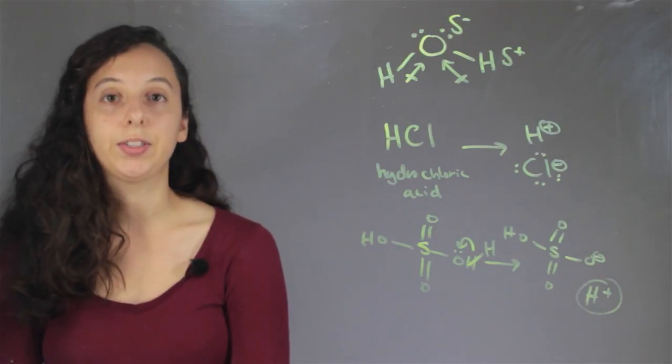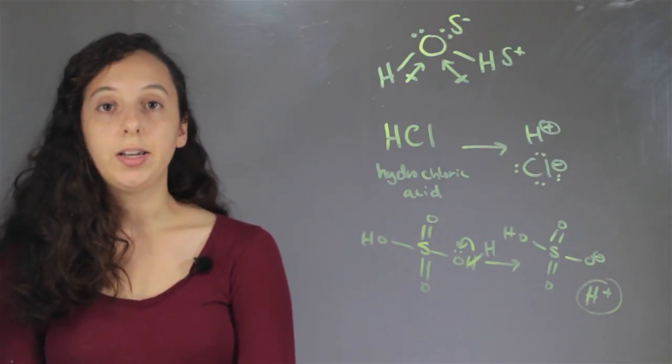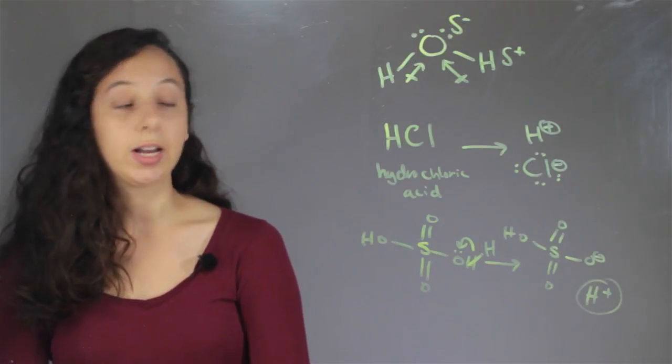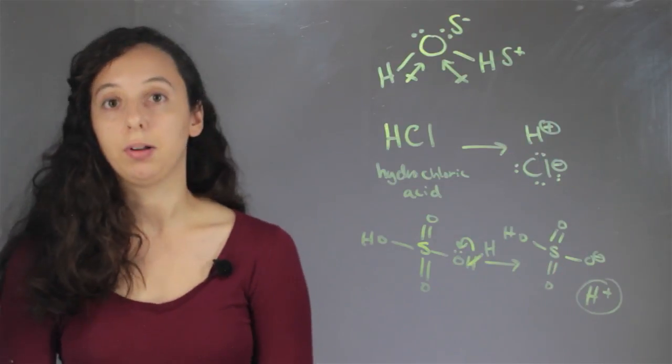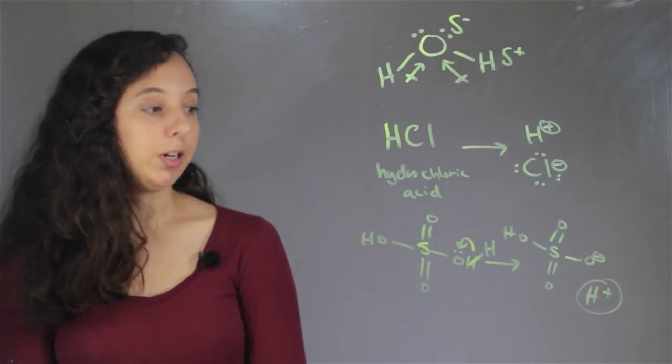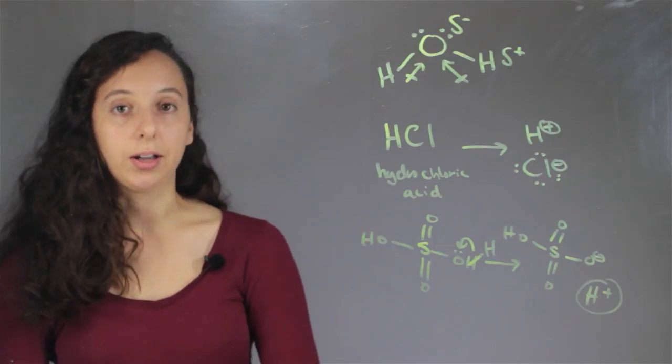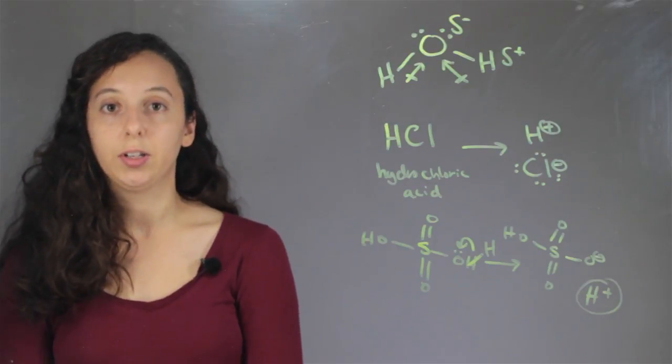So the way that we define if something is acidic or not on a pH scale is actually by literally measuring how many free hydrogens there are with no electrons. So the more free hydrogens that have zero electrons, the more acidic something is on a pH scale.